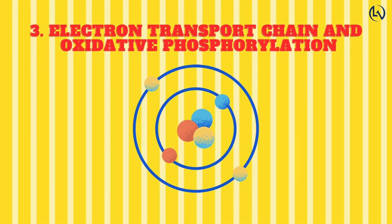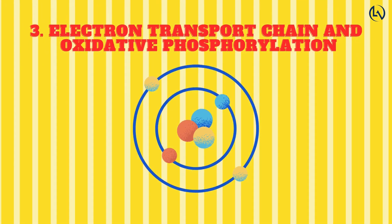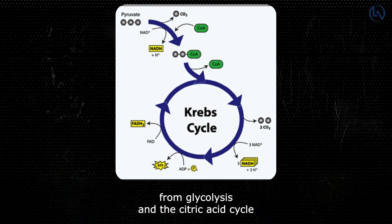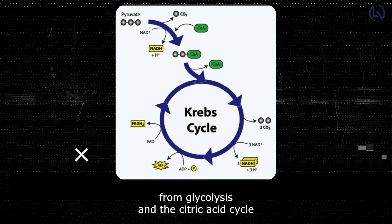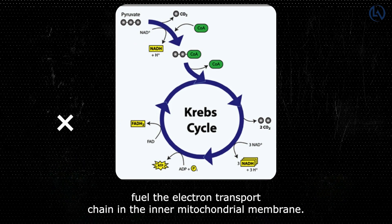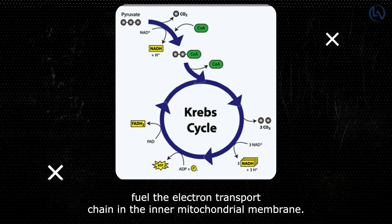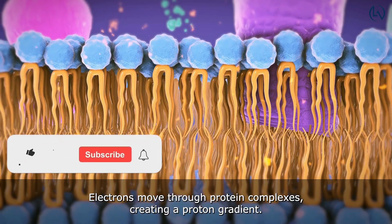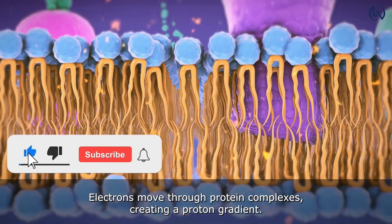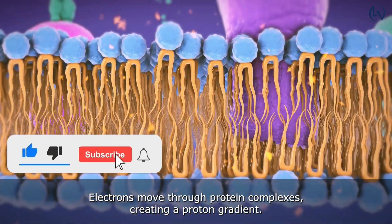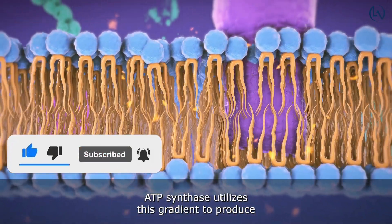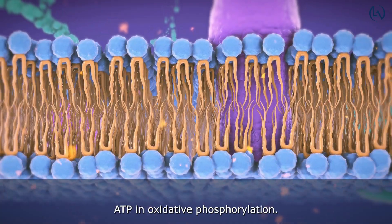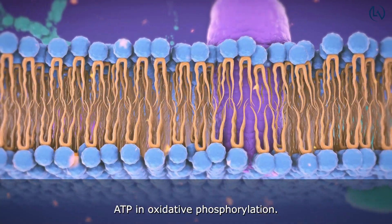Electron Transport Chain and Oxidative Phosphorylation: NADH and FADH2 from glycolysis and the citric acid cycle fuel the electron transport chain in the inner mitochondrial membrane. Electrons move through protein complexes, creating a proton gradient. ATP synthase utilizes this gradient to produce ATP in oxidative phosphorylation.